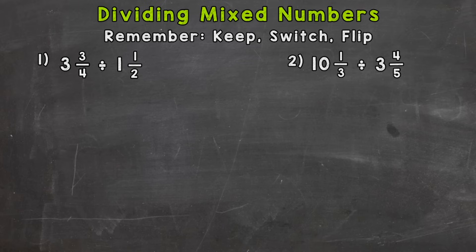So let's jump right in to number one. We have three and three-fourths divided by one and a half. The first thing we need to do when we're dividing mixed numbers is change them to improper fractions. That way, we have a numerator and a denominator.